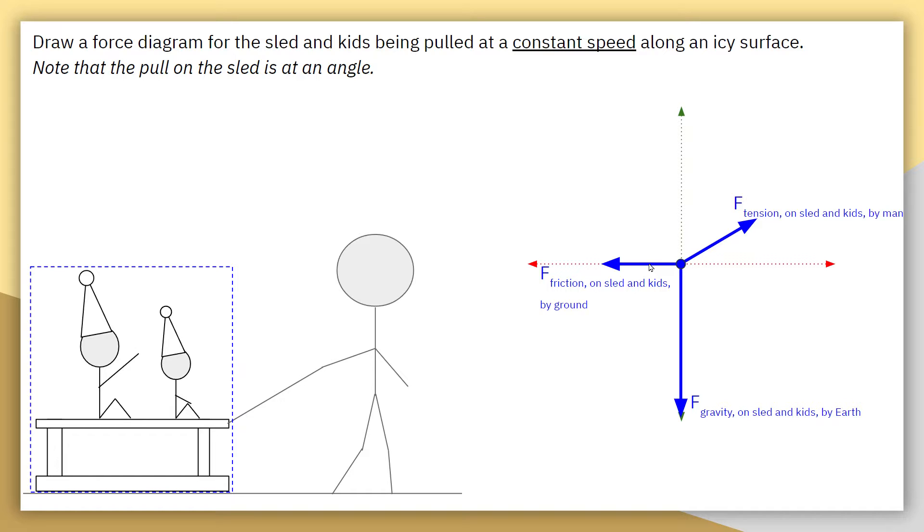I drew the force friction first. And then I used this length here to kind of approximate how far to the right I needed to draw my force tension. So that way, it would kind of align with how much on the x-axis that force tension is to have a balanced force overall.